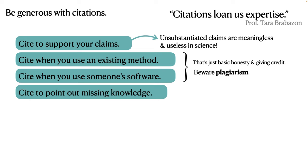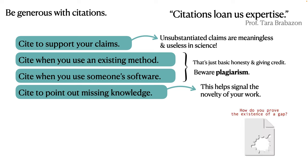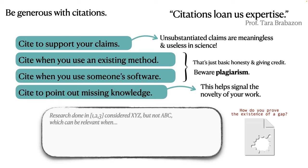You should also cite to point out missing knowledge. So citing literature that way can help signal the novelty of your own PhD work. Now, that's a tricky one, because how do you prove the existence of a gap in literature? And there's a couple of ways that you can do that. So for example, you can say that research done in one to three, these three citations, considered a method XYZ, but did not consider the method ABC, which can be relevant when blah, blah, blah.